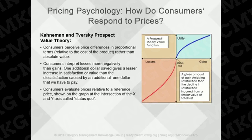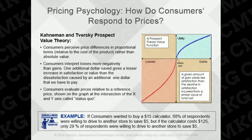Let's look at an example from the survey that was run as part of their study. If consumers wanted to buy a $15 calculator, 68% of respondents were willing to drive to another store to save only $5. But if the calculator costs $125, only 29% of respondents were willing to drive to another store to save the same $5. The relative savings, although the same dollar amount, was not seen as the same value.